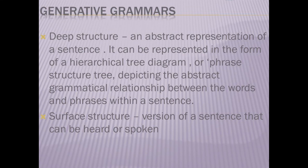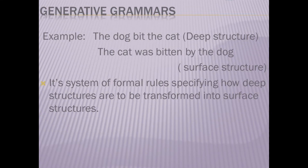Surface structure is the version of a sentence that can be heard or spoken. Example: 'The dog bit the cat' is the deep structure, while 'The cat was bitten by the dog' is the surface structure. The system of formal rules specifies how deep structures are to be transformed into surface structures.